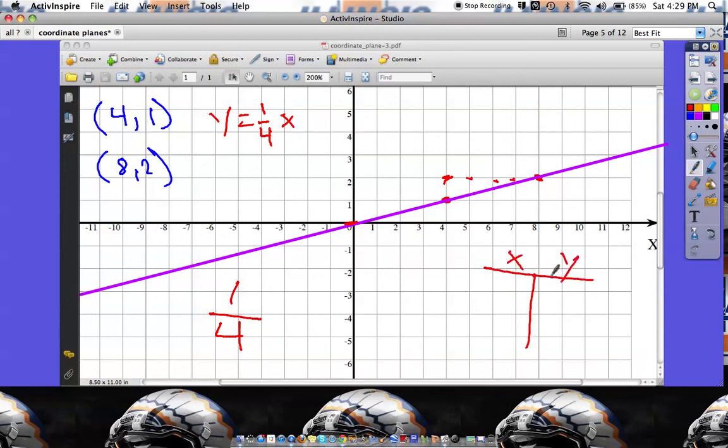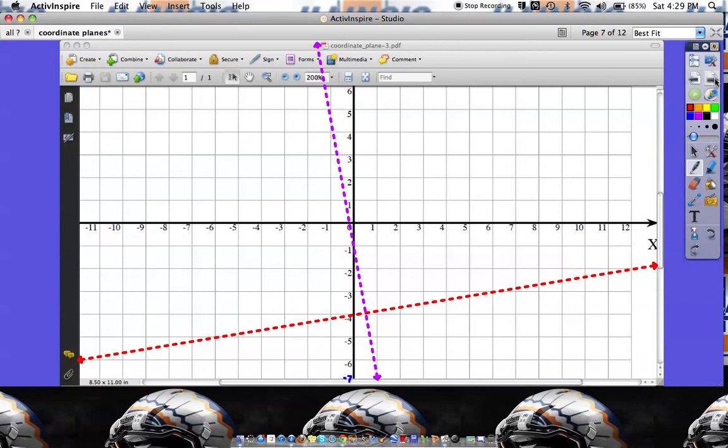Just to check real quick to make sure it works. This is always a good idea if you're unsure. Pick a point. There's a point, 8, 2. So if I do my table, 8, 2, let's see if it works. 1 over 4 times x. So that would be 1 over 4 times 8 over 1 when you're doing a multiplication problem. That's 8 over 4. I don't need to add anything to it, so 8 over 4 is 2. So that did work out.